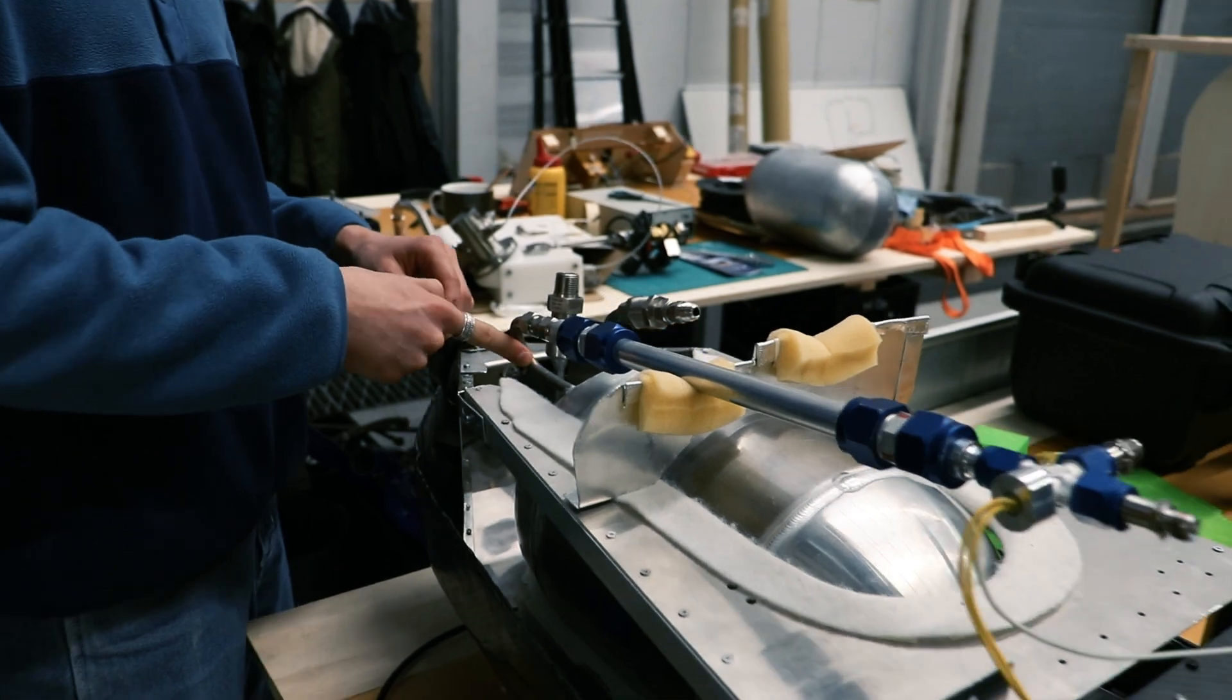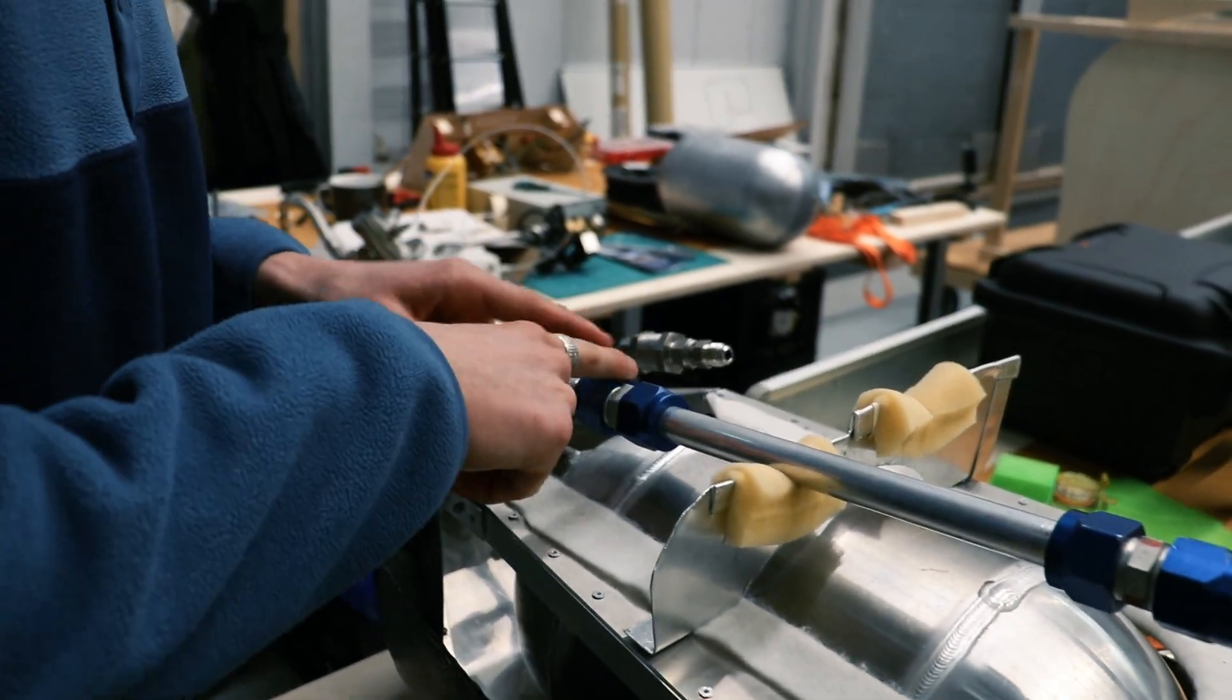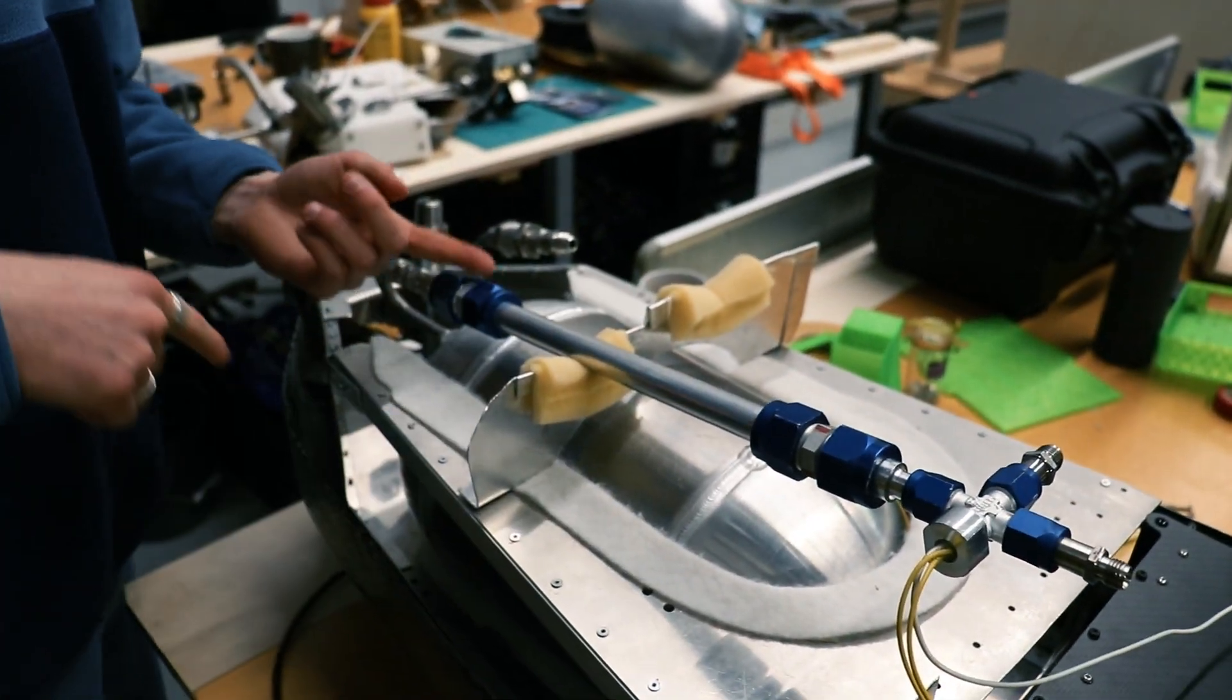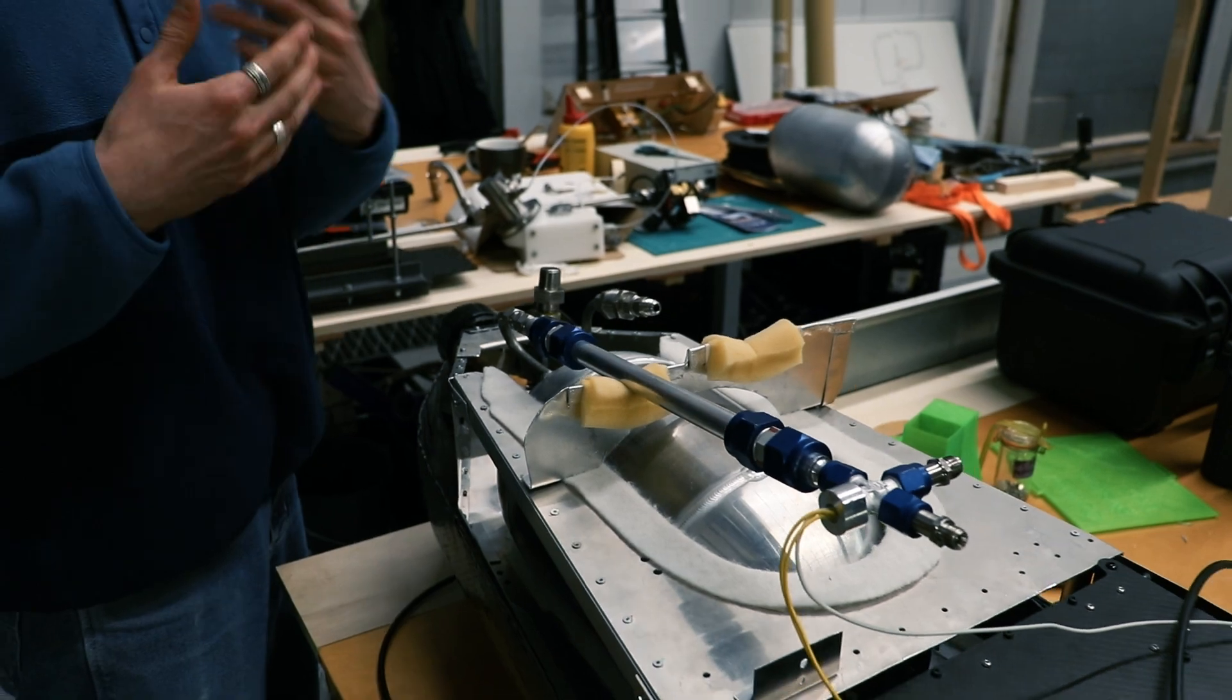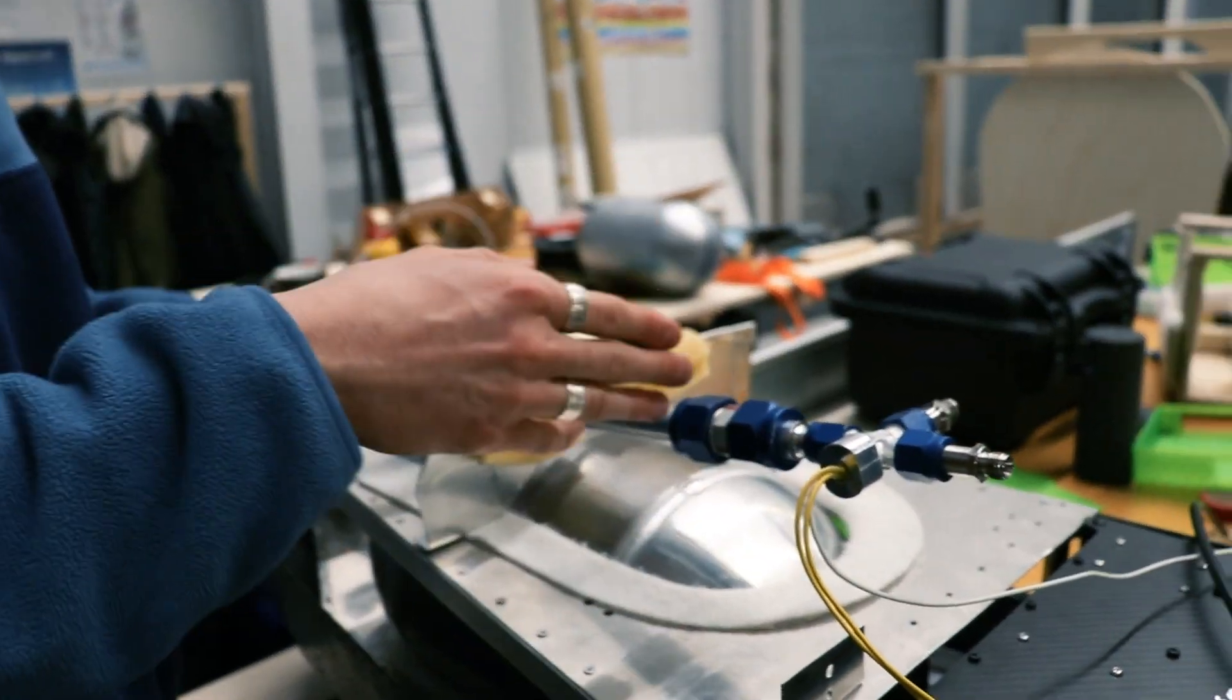The hydrogen gets taken out of the tank through this line. It enters what we call this little heat exchanger. It's actually a constantan wire coil. Constantan is a metal that its resistance doesn't change with temperature, meaning that if you put a certain amount of current through it, we know how much power you're putting in, and therefore we can control how much heat gets put into the hydrogen flow.